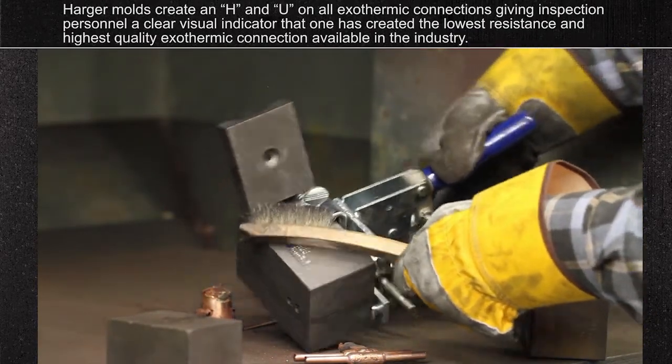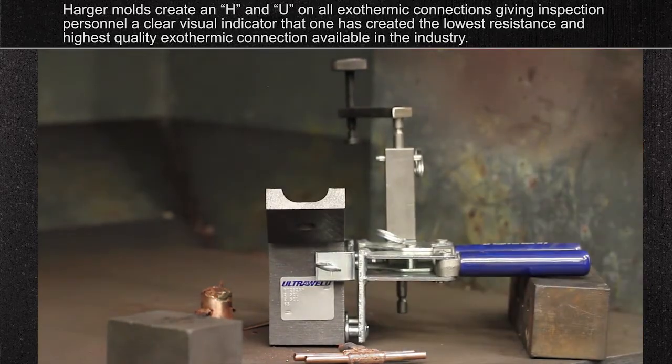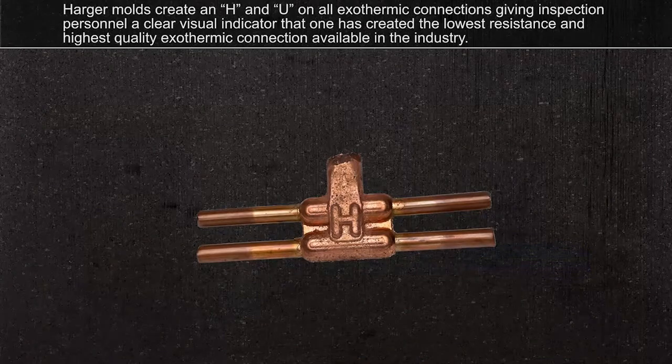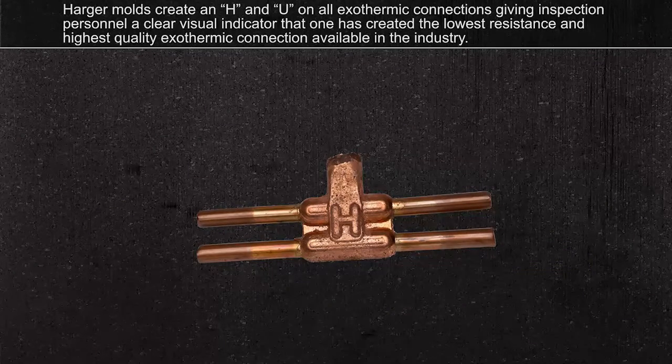Harger molds create an H and U on all exothermic connections, giving inspection personnel a clear visual indicator that one has created the lowest resistance and highest quality exothermic connection available in the industry.